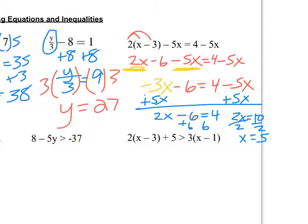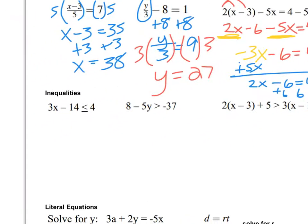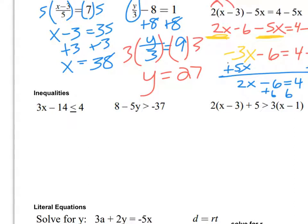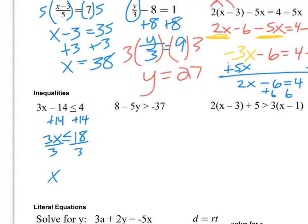When we move on to inequalities, they are the same as equations, except when we multiply or divide by a negative — then we switch the inequality sign. Looking at this first one, it's really just like a two-step equation. We're going to add 14, so 3x is less than or equal to 18. Divide by 3, so x is less than or equal to 6.